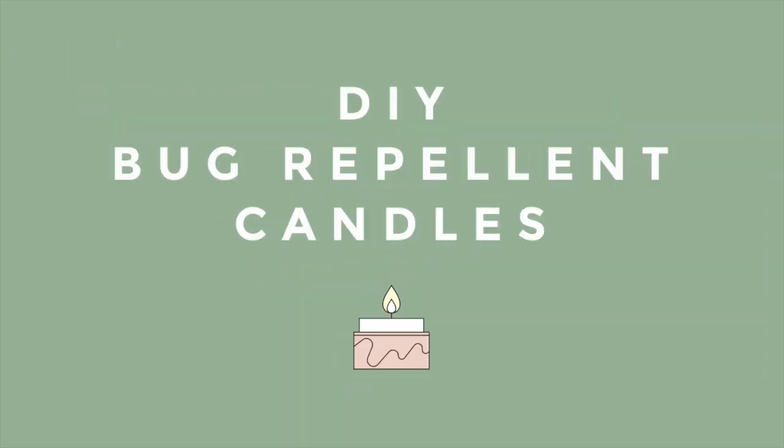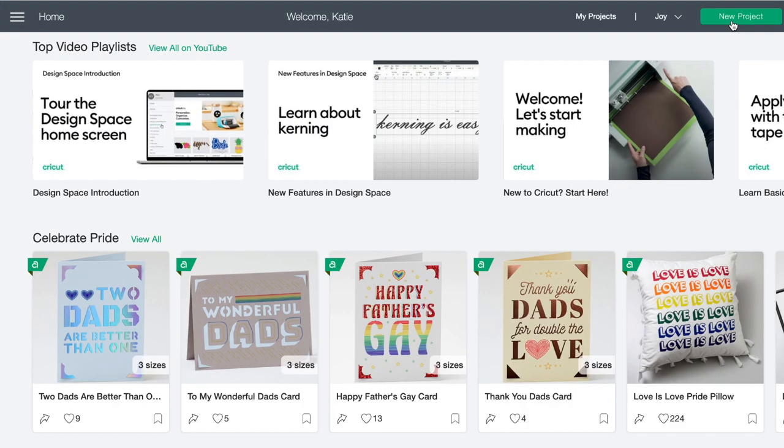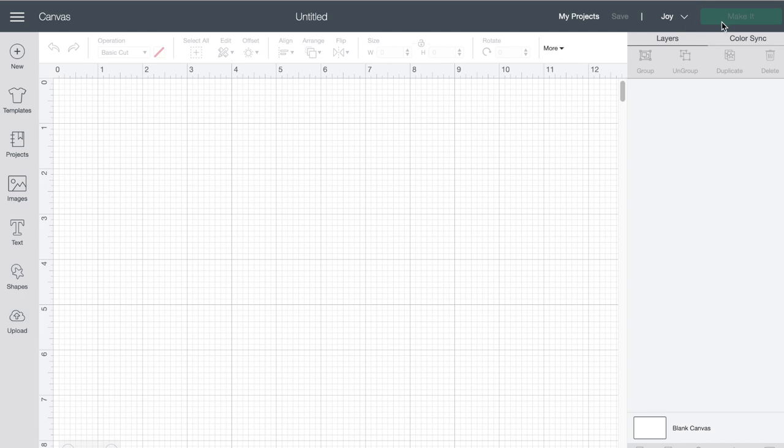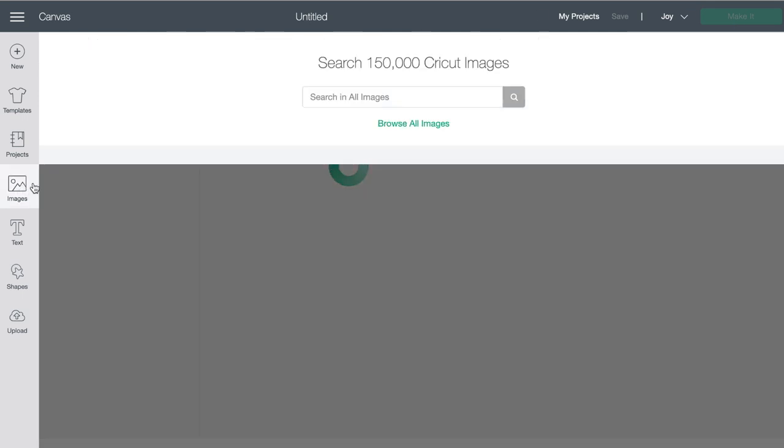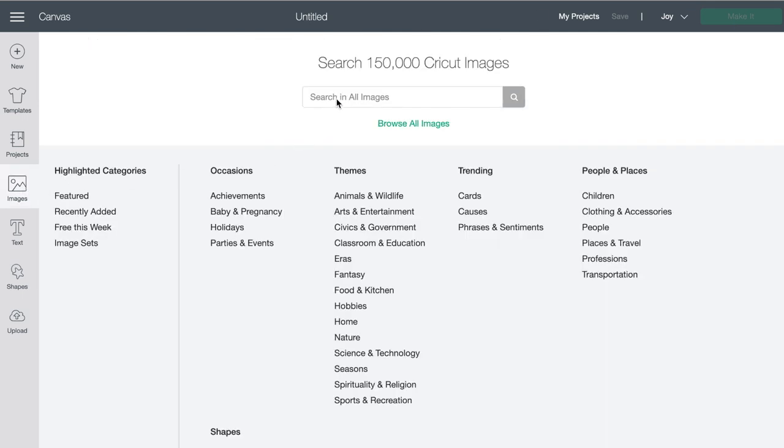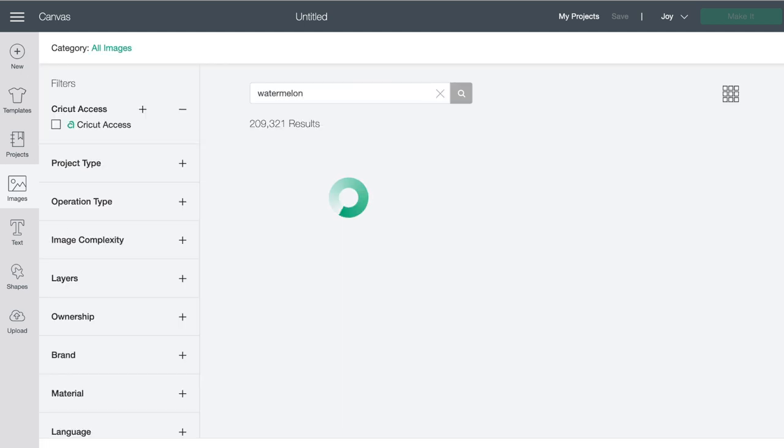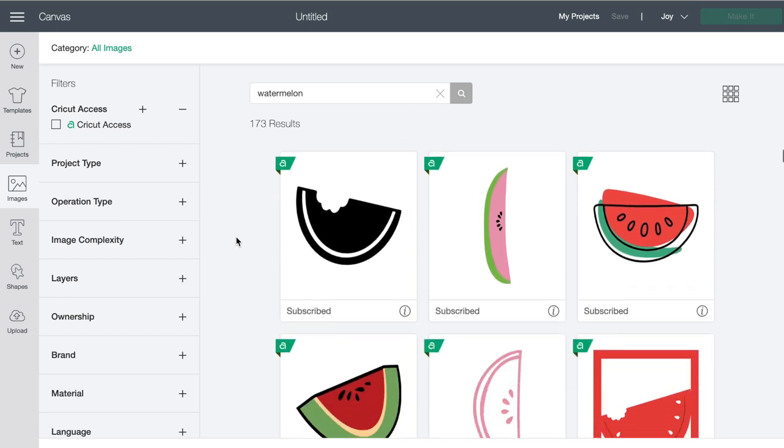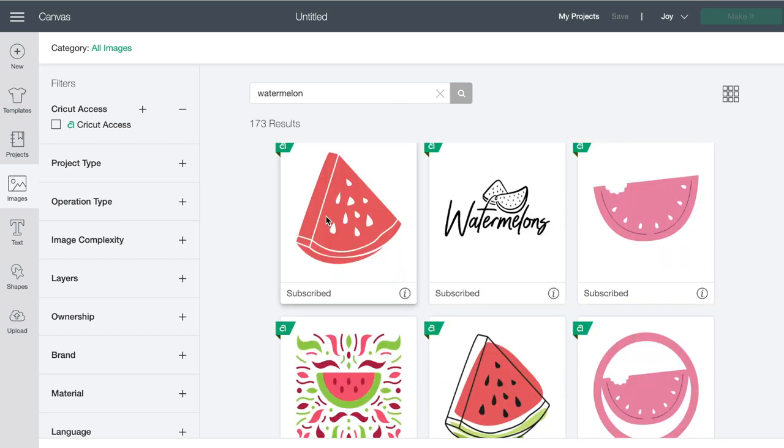So let's go ahead and get started. Okay, so from the home screen we're going to start a new project and then I'm going to go ahead over on the left to Images. And I really wanted to make these super summery, so I just thought of what really reminds me of summer and one of those things is watermelon.